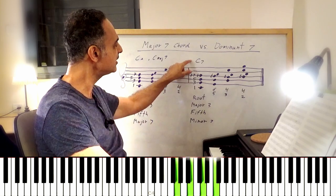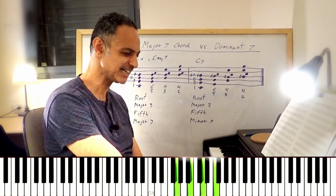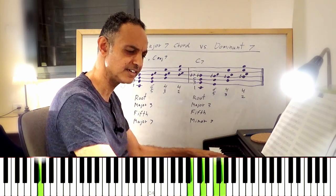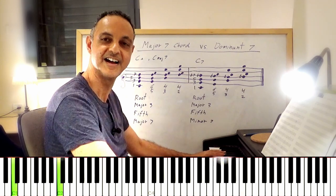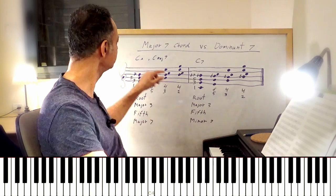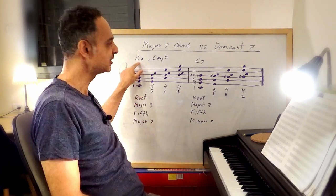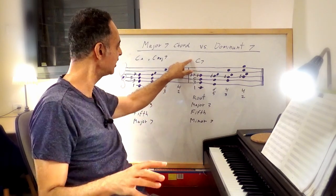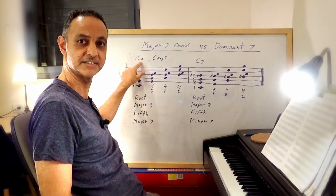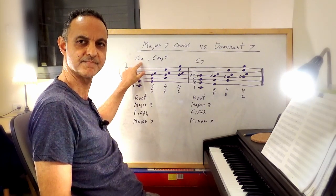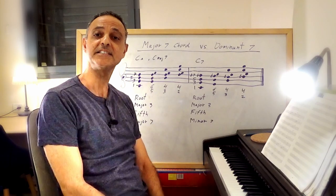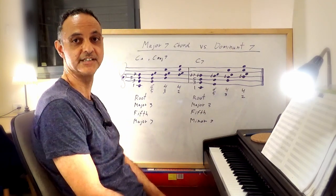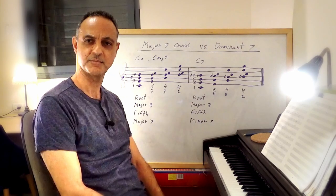A dominant 7th chord is unstable — it wants to resolve. It wants to resolve to a tonic chord, in this case C major 7. The dominant is unstable and resolves to the tonic. I must also say that the major 7th chord can be subdominant if you're talking about the 4th degree of the scale, but I'll make another video about that.